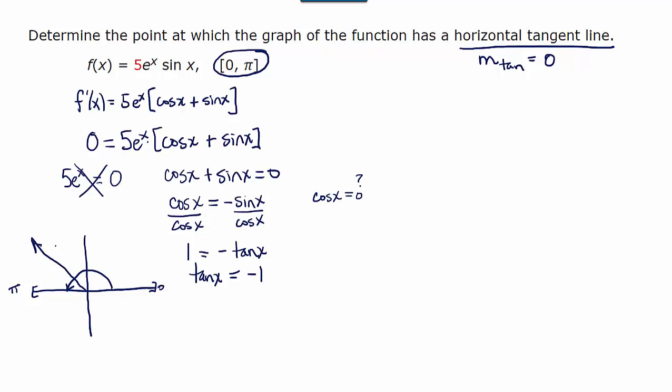we know that the reference angle pi over 4, 45 degrees, goes through the pair of coordinates negative root 2 over 2 comma root 2 over 2. So our y over x, or our tangent value, would be negative 1. This is going to be the angle 3 pi over 4. The solution in the interval from 0 to pi for this equation is 3 pi over 4.